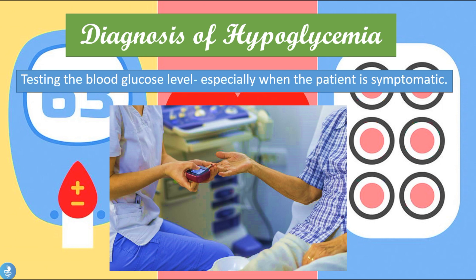So the diagnosis of hyperglycemia — the best thing to do is to test the blood glucose level, especially when the patient is symptomatic. As we said, anything below 70 milligrams per deciliter will be considered hyperglycemia.